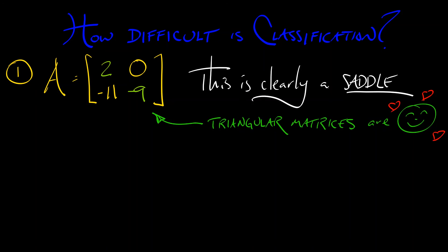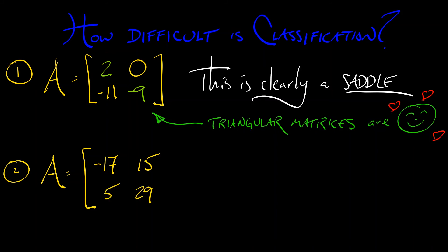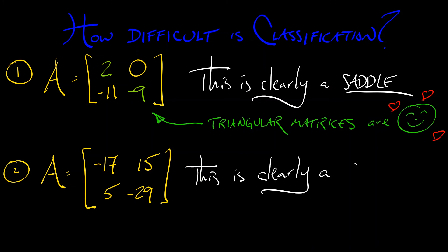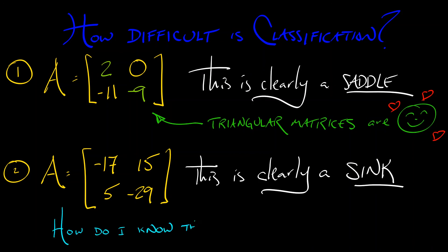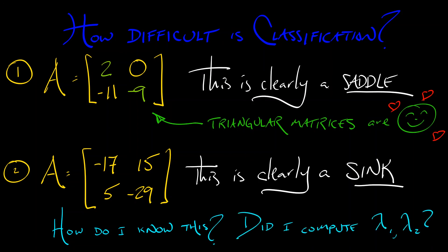But not every matrix is triangular. So let's write down a random matrix: A is negative 17, 5, 15, negative 29. Do you want to compute the eigenvalues for that? No. Do I want to compute the eigenvalues for that? No. But just by looking at it, this is clearly a sink — not a spiral sink, just a regular sink. I don't know what the eigenvalues of this matrix are, but I do know that it's a sink. And what we're going to do is the same inference.